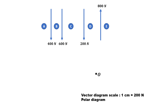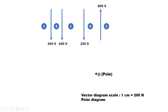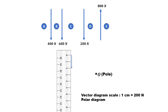Select some pole O as shown over here. The vector diagram scale we have chosen from the magnitude of the forces. The scale chosen is 1cm equal to 200N. So 400N divided by 200 is 2cm. The 400N force will be represented by 2cm in the downward direction, and it is lying between A and B. So let us draw a vector of 2cm.